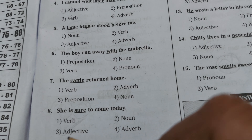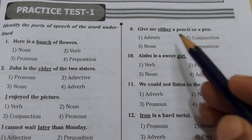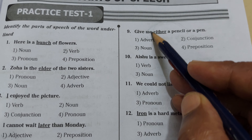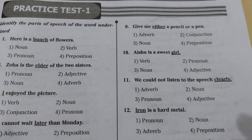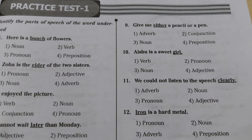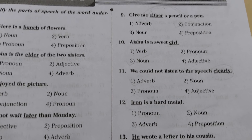Number nine: 'Give me either a pencil or a pen' — 'either...or' is underlined. Either...or is a conjunction. Similarly, neither...nor are also conjunctions.